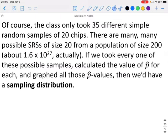Of course, the class only took 35 different simple random samples of 20 chips. There are many, many possible simple random samples of size 20 from a population of size 200. There's actually about 1.6 times 10 to the 27th samples that we could possibly take. If we take every one of those possible samples, calculate the possible values of p̂ for each, and graph all those p̂ values, then we would actually have the sampling distribution.